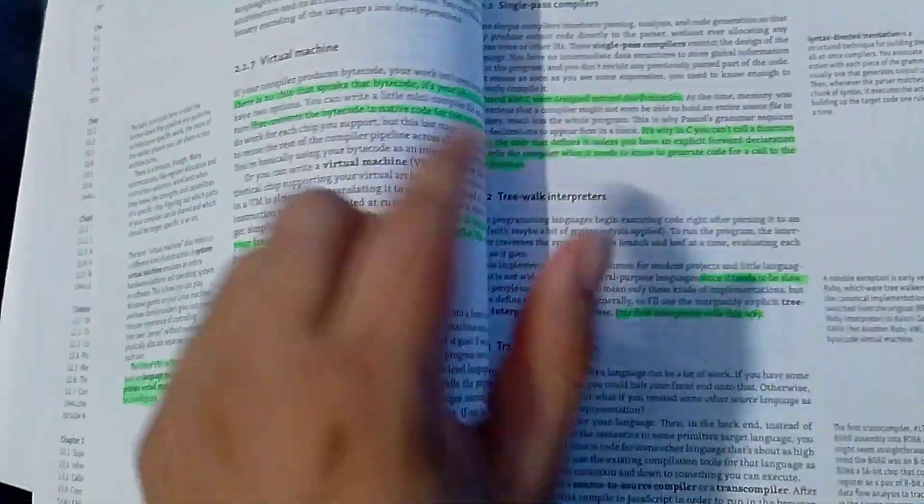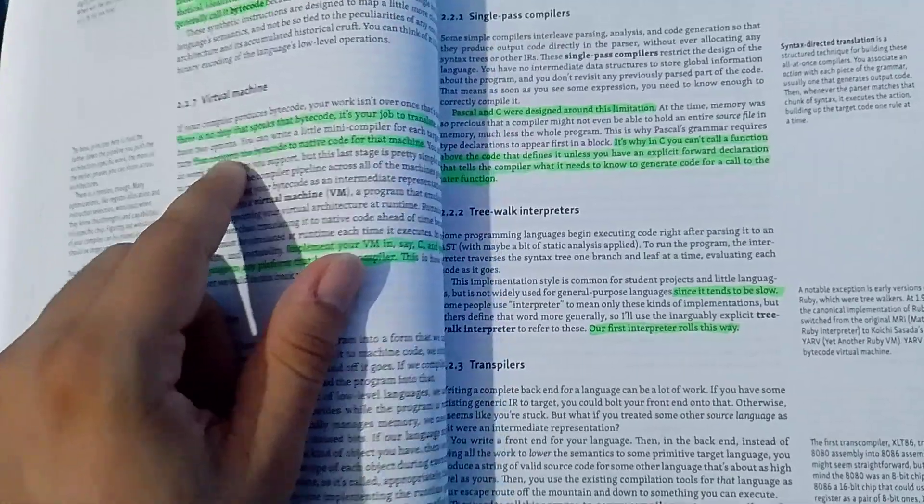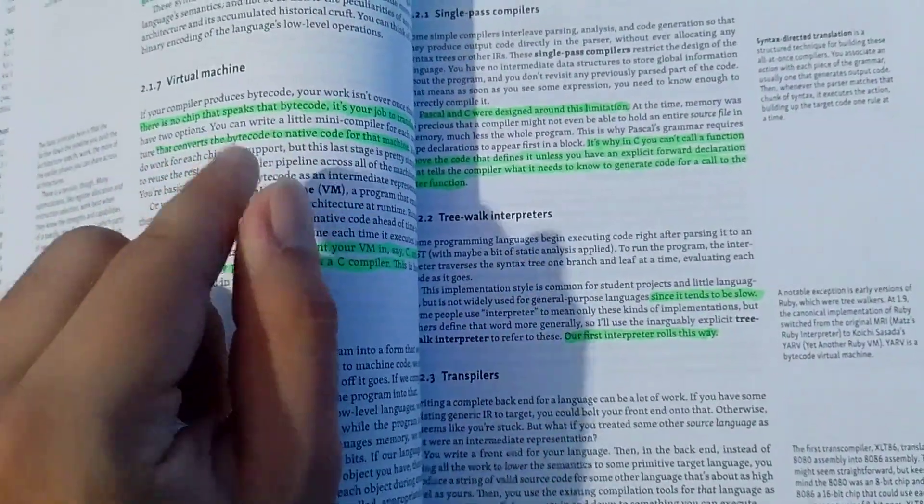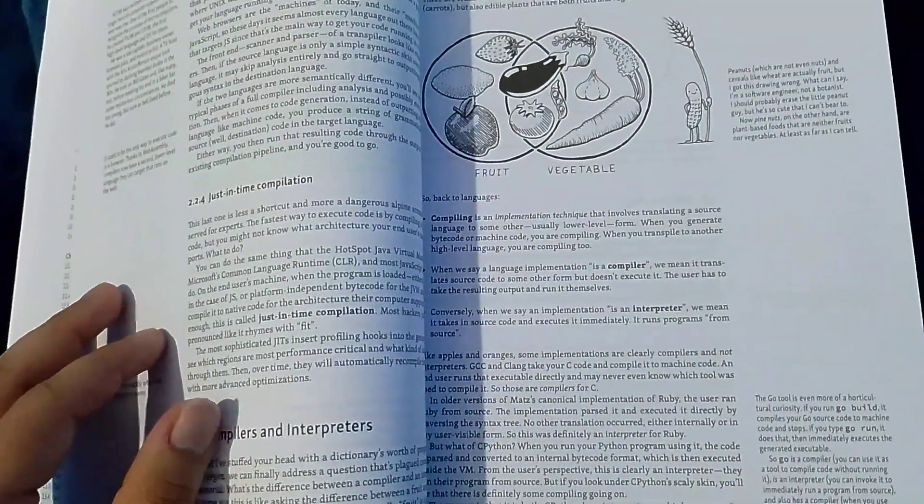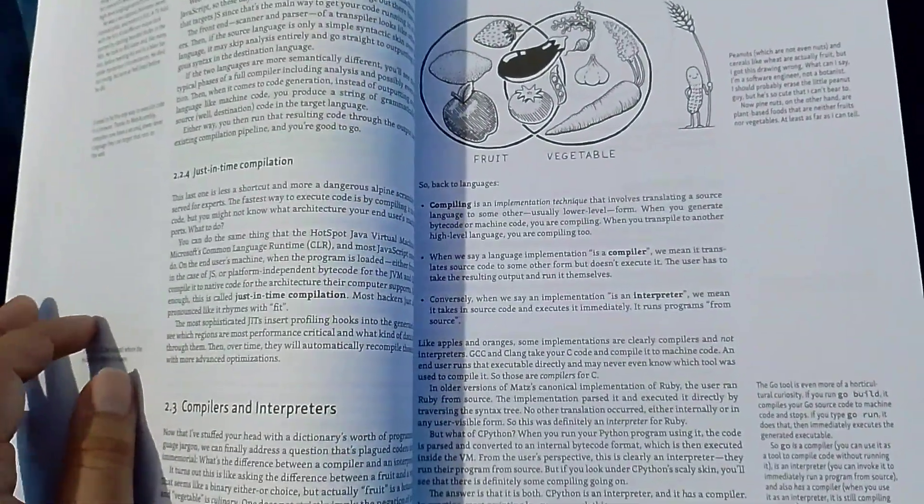And those are some details, like what is a virtual machine. In that, we are going to use the Java virtual machine to make that part 2. But, in C, we are going to implement this by ourselves. So, this book is pretty interesting. I really love the way he teaches all the way.